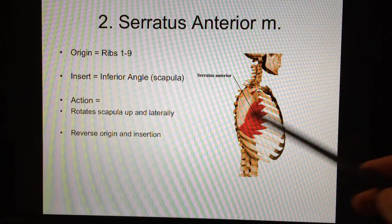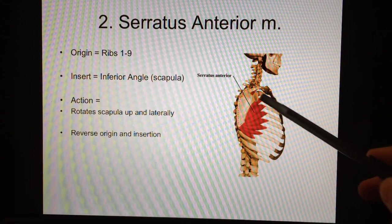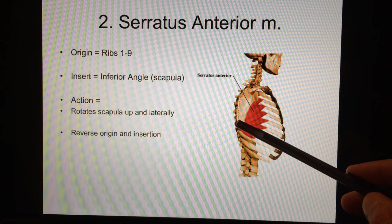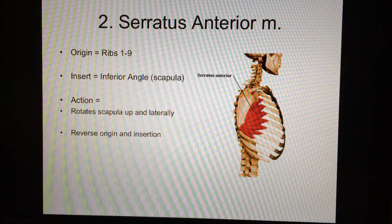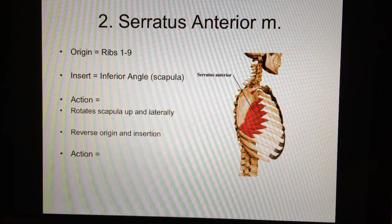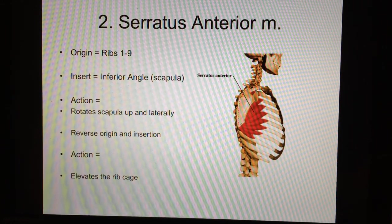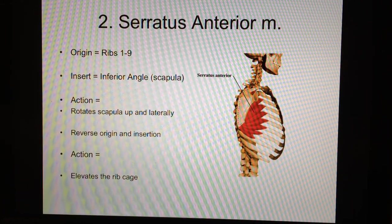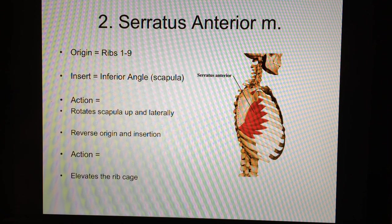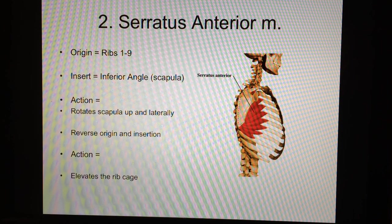Now, this is another one. You can also reverse the origin insertion. So you can make the ribs the moving part, lock the scapula, and then this becomes the origin. If that's the case, then you're going to lift up and out on ribs one through nine. It's going to elevate the rib cage during forced inspiration. Just sit there right now. Take a deep breath and just feel and look at what happens to your chest. Your whole body arches up because you got to make that chest cavity really wide for air to flow and rush in there and get maximum oxygen.